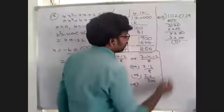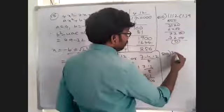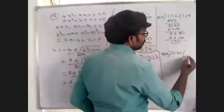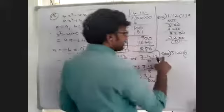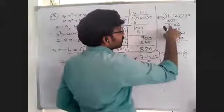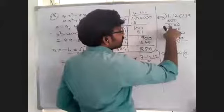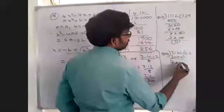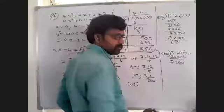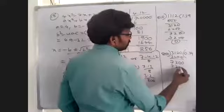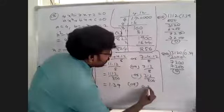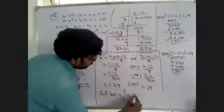Now for 312 divided by 800: since 312 is smaller than 800, we write 0-point. 3120 divided by 800 gives 3, remainder 720. 7200 divided by 800 gives 9. So the value is 0.39.